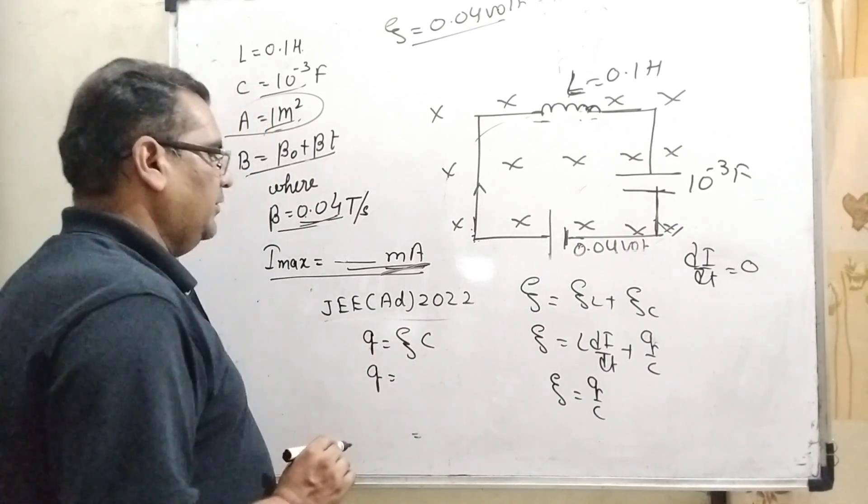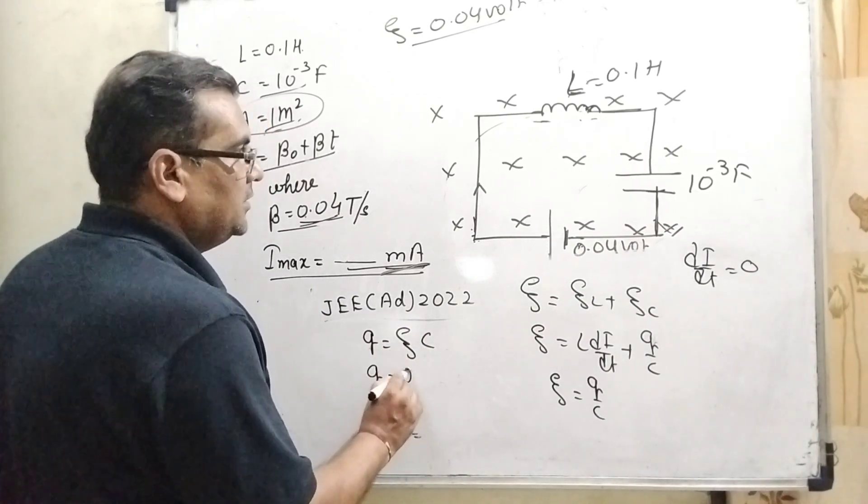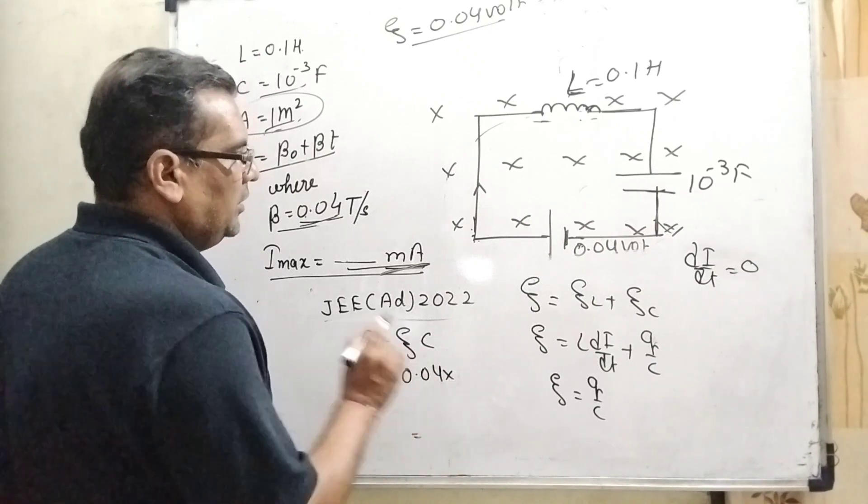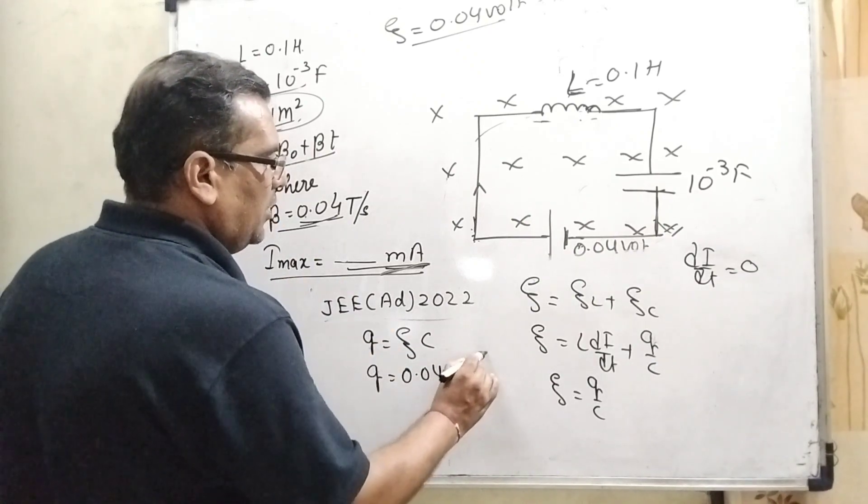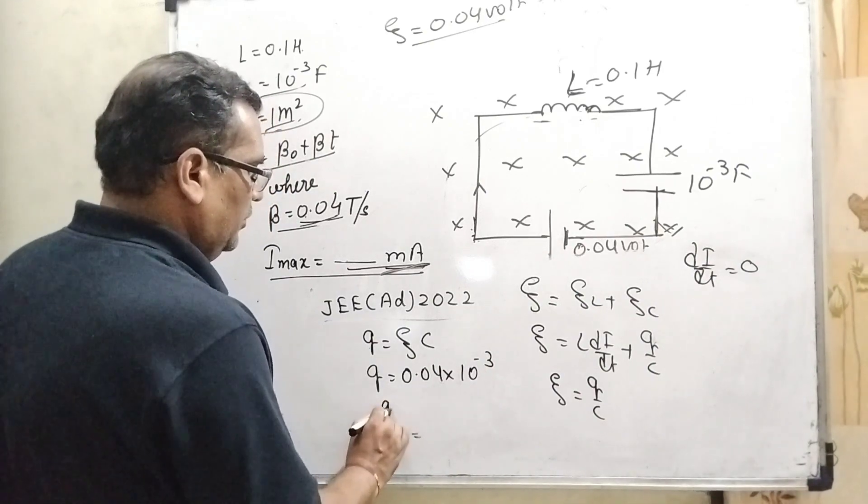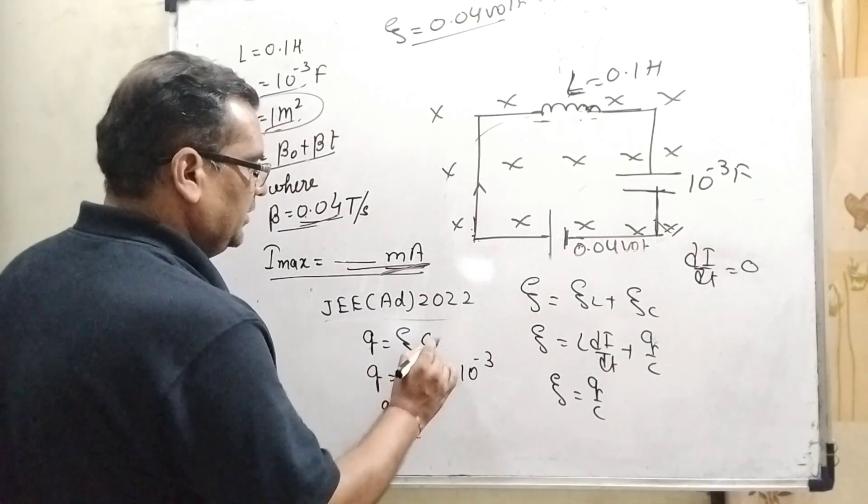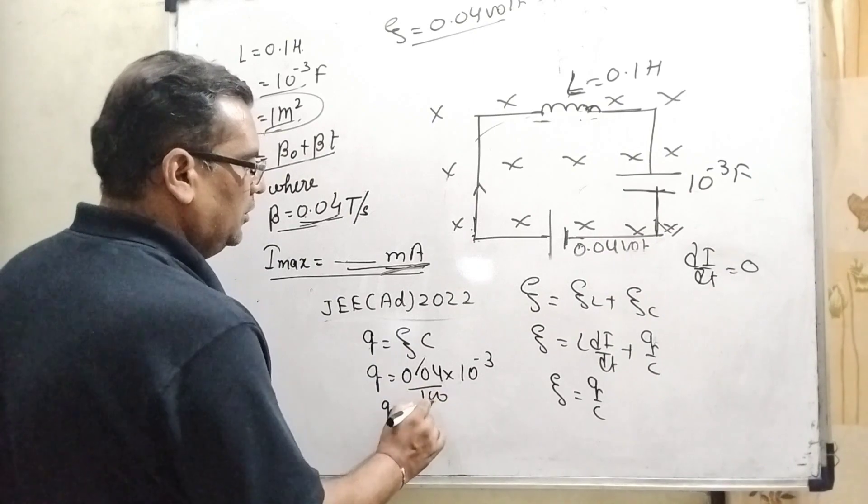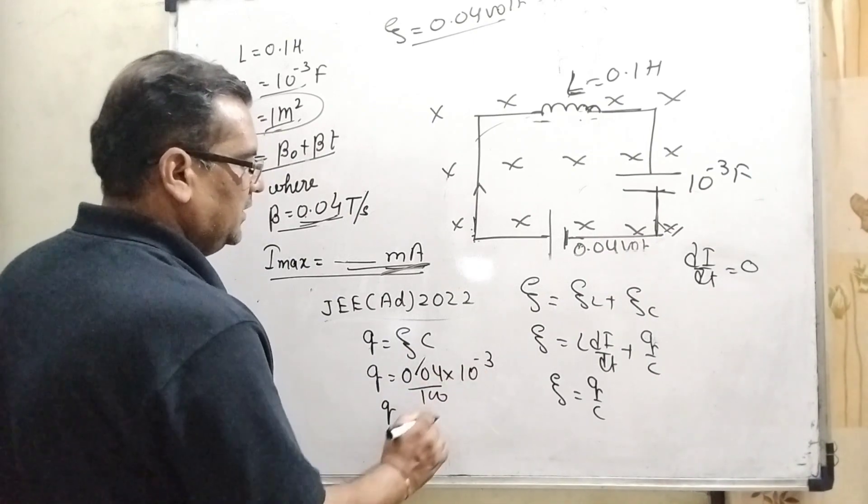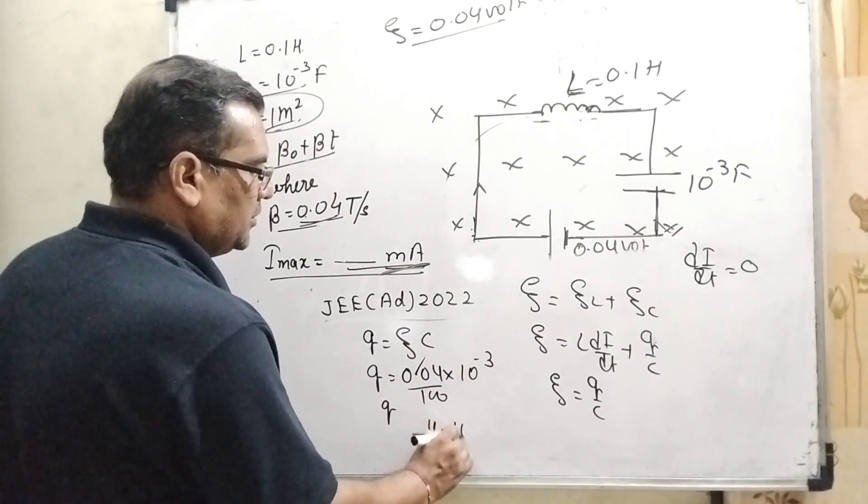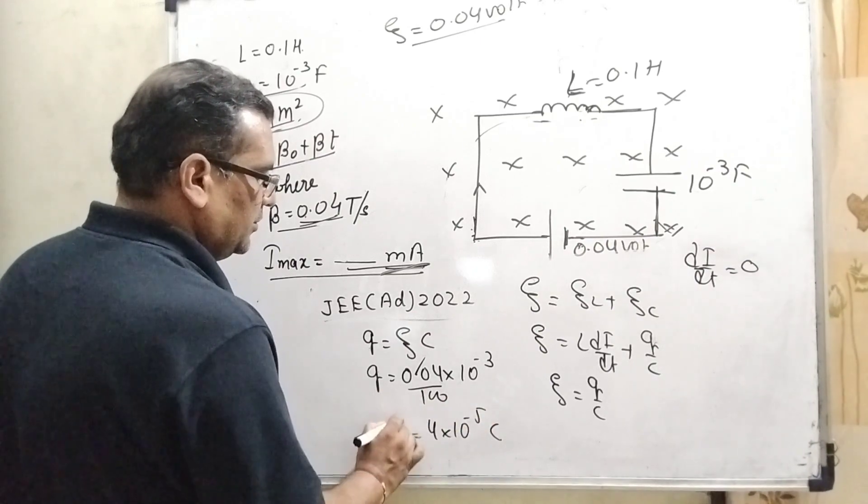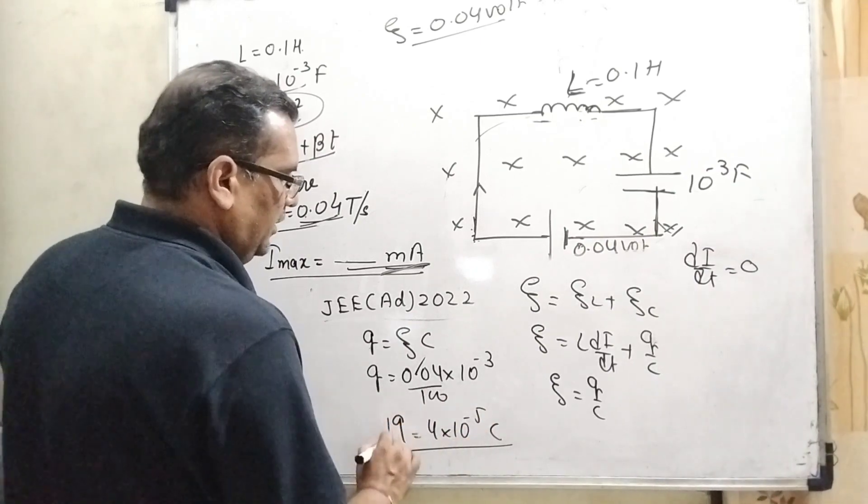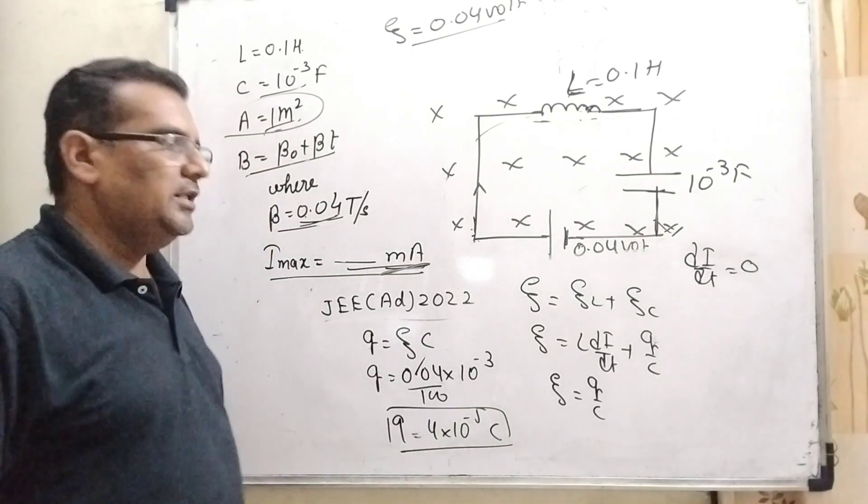What is the value of EMF? That is 0.04. And what is the value of capacitance? That is 10 raised to the power minus 3. Then Q can be written as, we are removing this decimal, 4 into 10 raised to the power minus 2 and minus 3, that is 4 into 10 raised to the power minus 5 Coulomb. That is charge. So here we get the charge in this case.